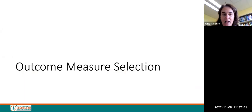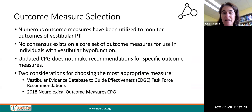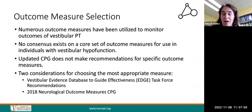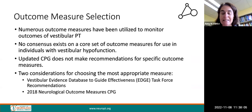As we think about these algorithms, the first is outcome measure selection. There are numerous outcome measures utilized to monitor outcomes of patients who have vestibular dysfunction, and there is no consensus on a core set of outcome measures to use in patients with vestibular hypofunction. The updated clinical practice guideline does not make recommendations for specific outcome measures, but it does discuss them.